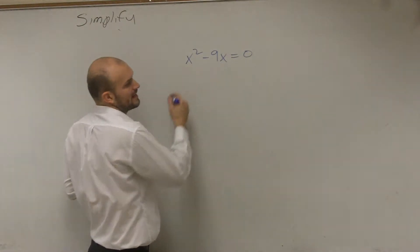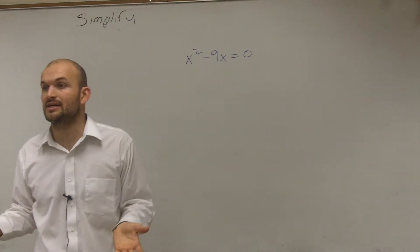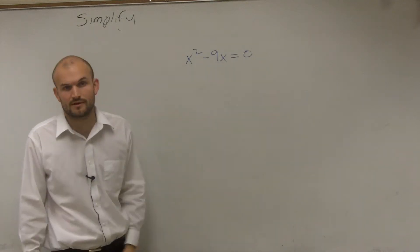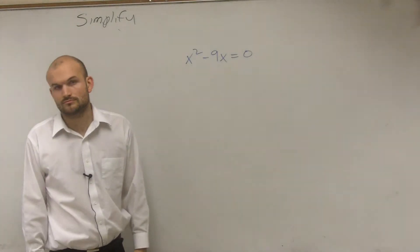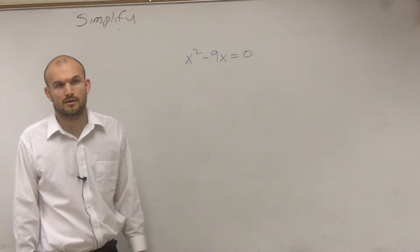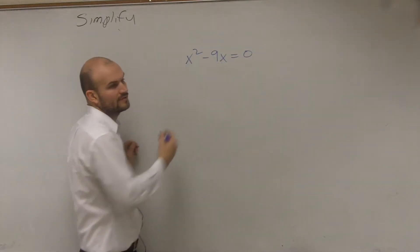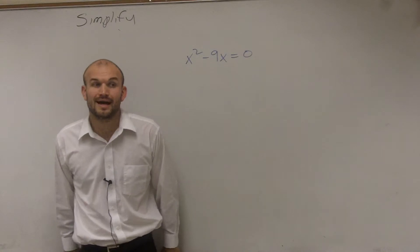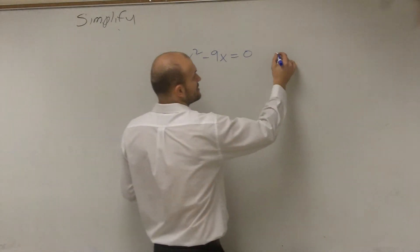So the first thing we always look at is to see what our GCF is. What do these two terms share? A 1. Well, they share a 1. All numbers are going to share a 1. But what else, besides 1, do they share? x. So can you factor out a GCF of x?